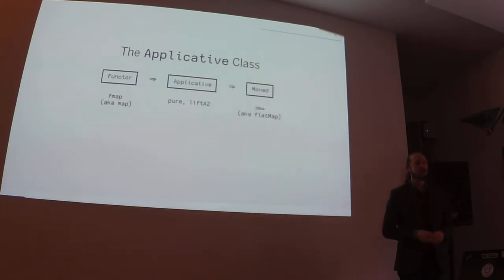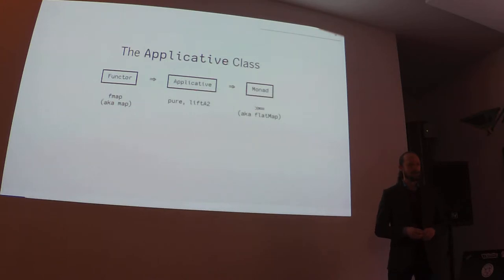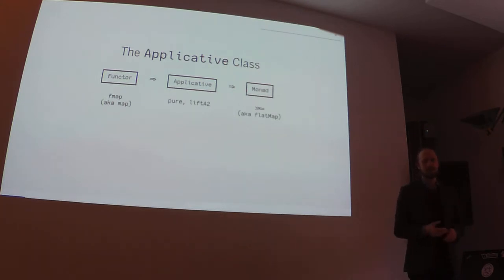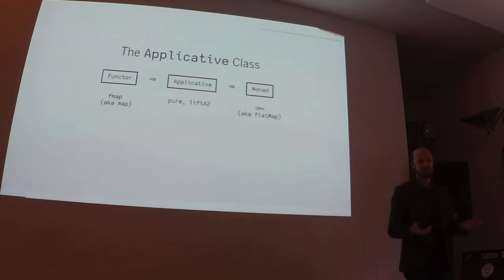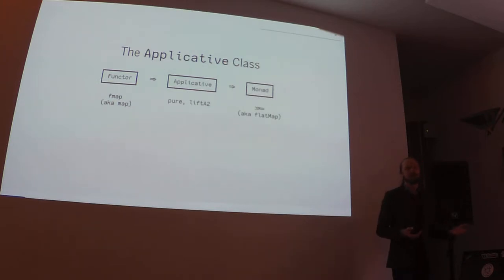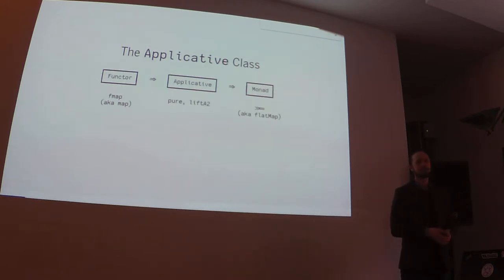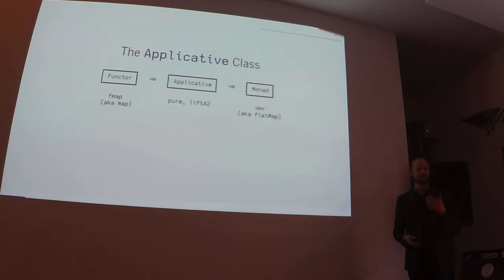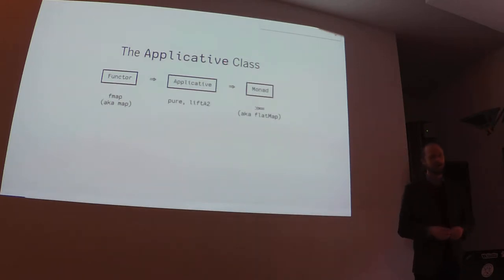I'm going to talk first about monadic and applicative effects in general. The functor and monad type classes have been around in Haskell for at least 20 years. Most combinator libraries or DSLs are based on a monad type, and this is well known to people outside the functional programming community — you have the flat map function, known from JavaScript promises, from Java streams. A lot of languages have adopted these types even without a formal monad abstraction.